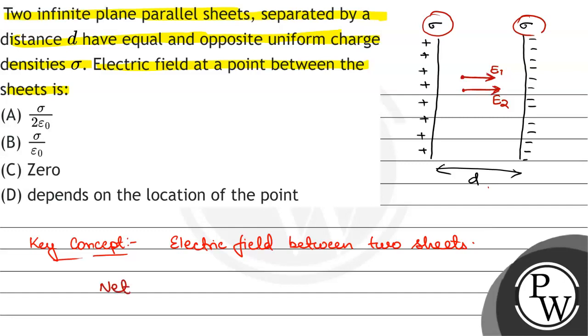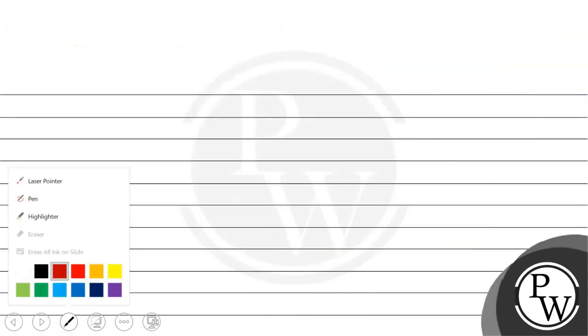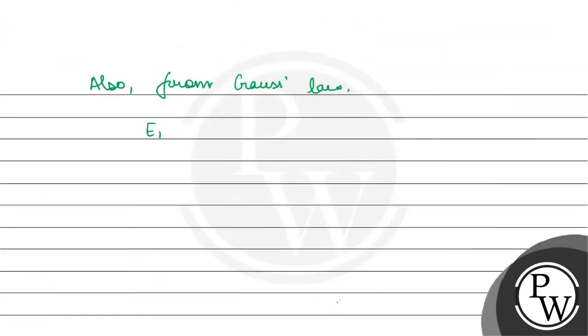The net electric field between the sheets equals E1 plus E2, which is sigma over 2 epsilon not, plus sigma over 2 epsilon not, which equals sigma over epsilon not.